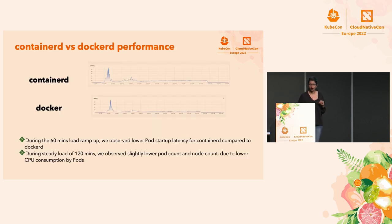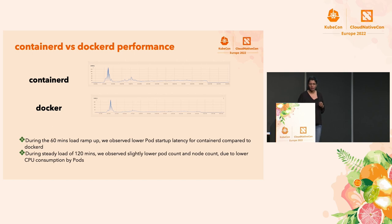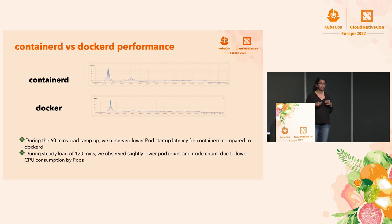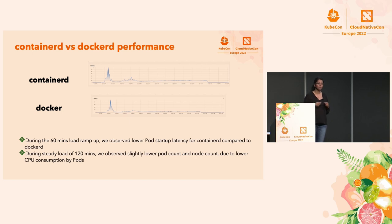ContainerD definitely fared well, especially in startup times. ContainerD's maximum startup latency was only about 120 seconds in our synthetic workload, as opposed to Docker which took about 200 seconds. We're excited about this performance gain as it will come in handy during our tax peak seasons when HPA kicks in and many replicas are running at the same time. During the steady state of about 120 minutes, because of slightly lower CPU consumption, there was less pod and node usage, and HPA didn't kick in as quickly compared to Docker.